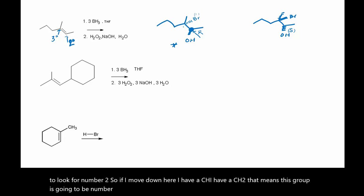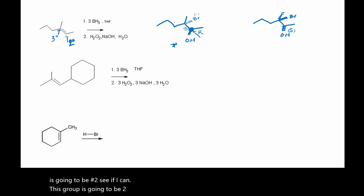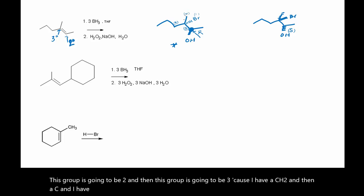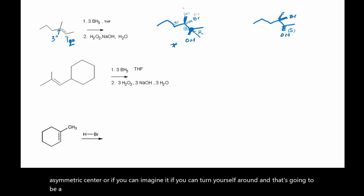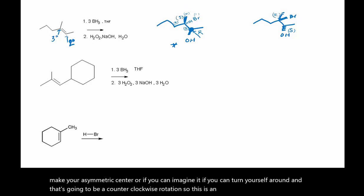This group is going to be number two, and then this group is going to be number three, because I have a CH₂ and then a C, and I have a CH₃ here. Now here, my four is coming out towards me. So you either make your asymmetric center, or if you can imagine it — if you can turn yourself around — that's going to be a counterclockwise rotation.